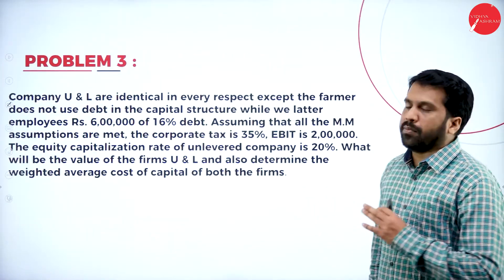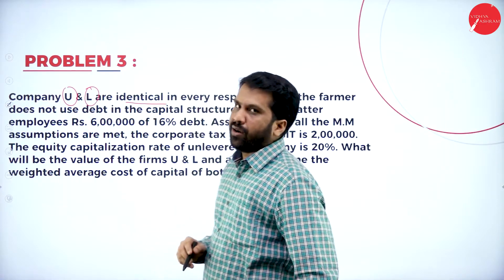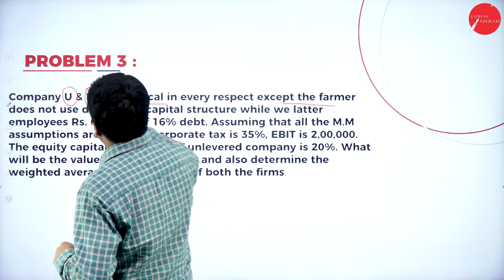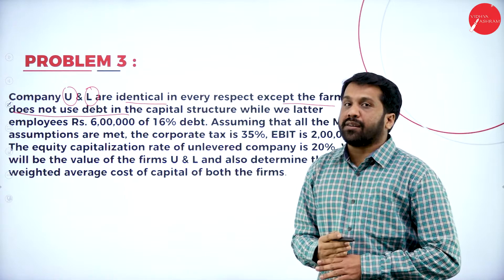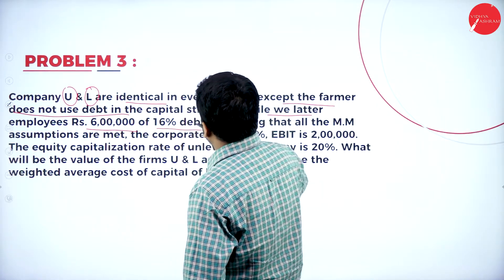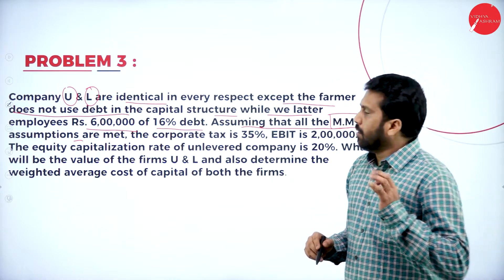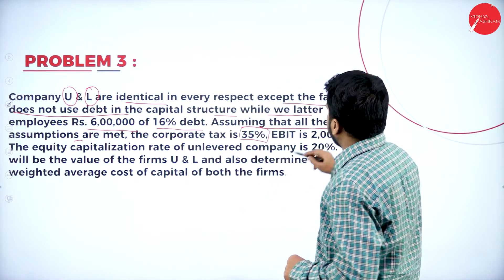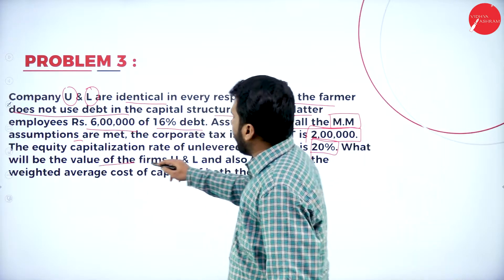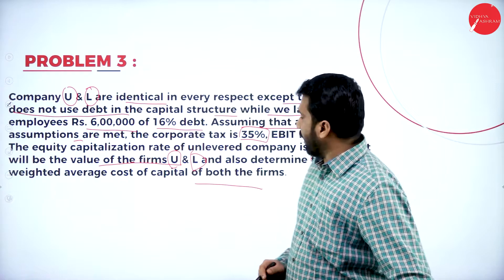Problem 3 — a 10-mark question. Companies U and L are identical in every respect except U does not use debt (unlevered) while L employs Rs. 6,00,000 of 16% debentures (levered). Assuming all MM assumptions hold, the corporate tax rate is 35%, EBIT is Rs. 2,00,000, and the equity capitalization rate for the unlevered company is 20%. Find the value of both firms and determine the weighted average cost of capital (WACC) for each.